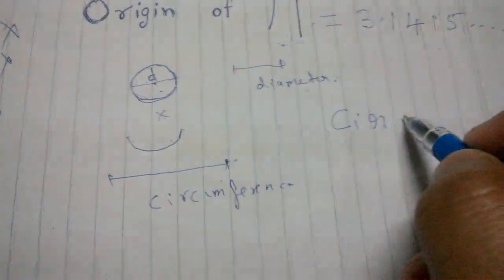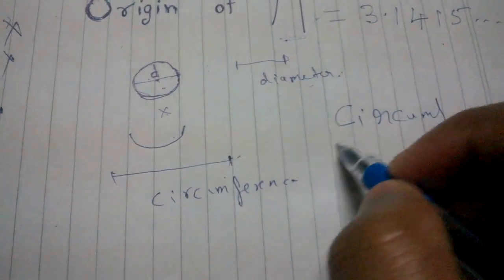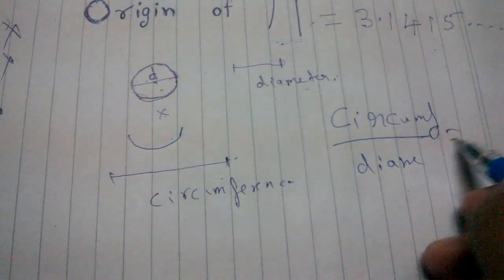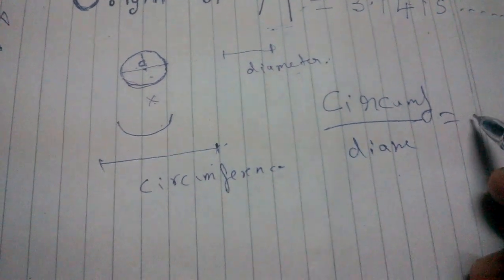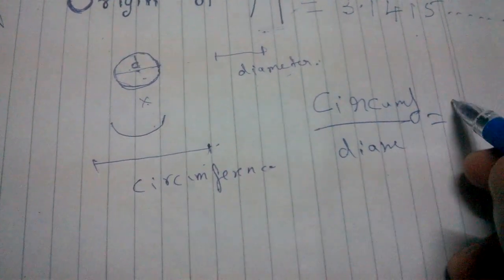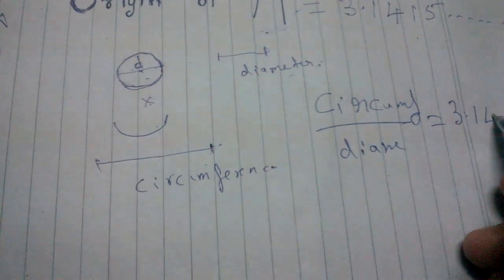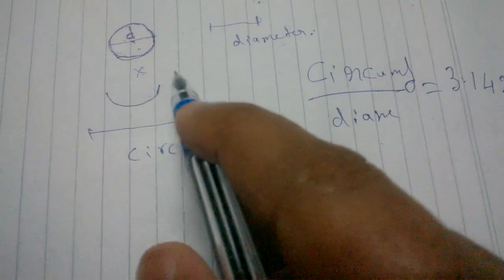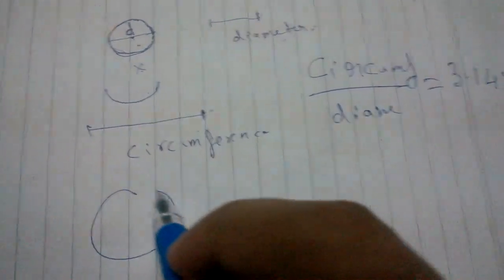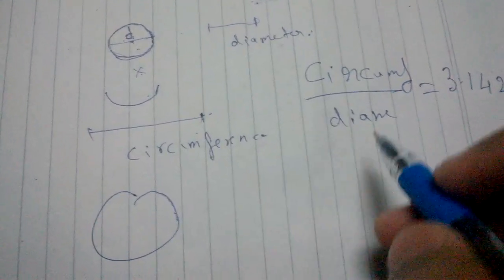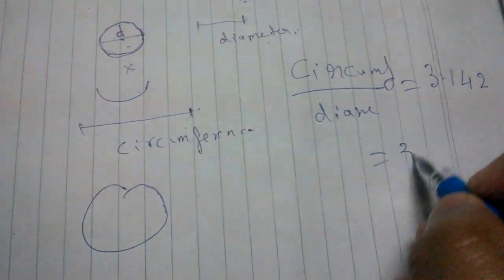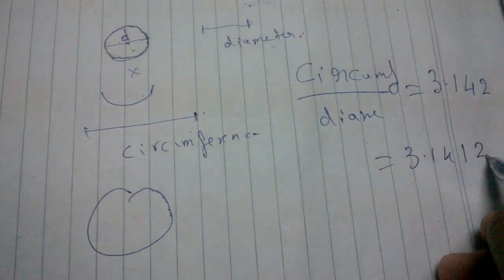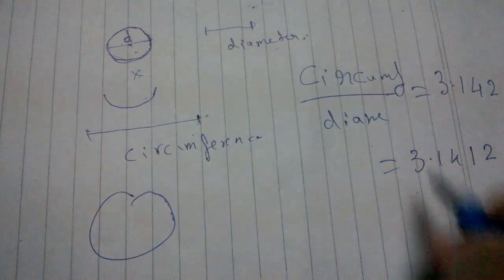So what we do is we just divided both of them: circumference divided by diameter. And we find the answer of that to be around 3.142. That person did the same experiment again with a bigger circle, and he found out the answer was like 3.1412. So it kept on happening.